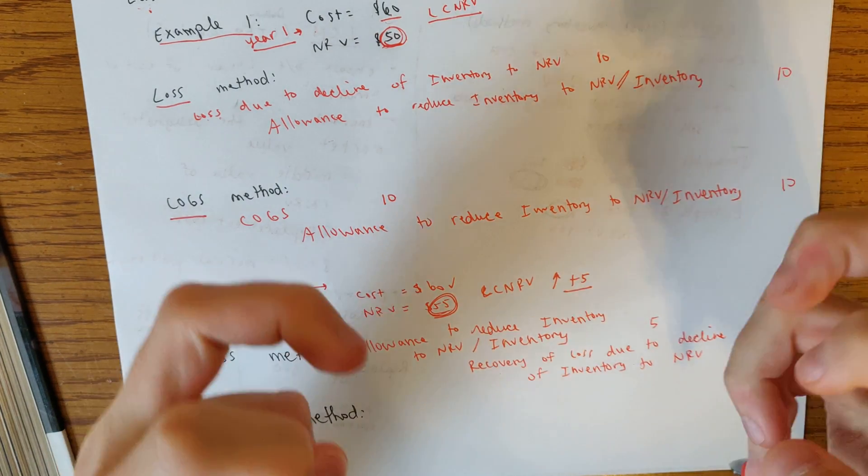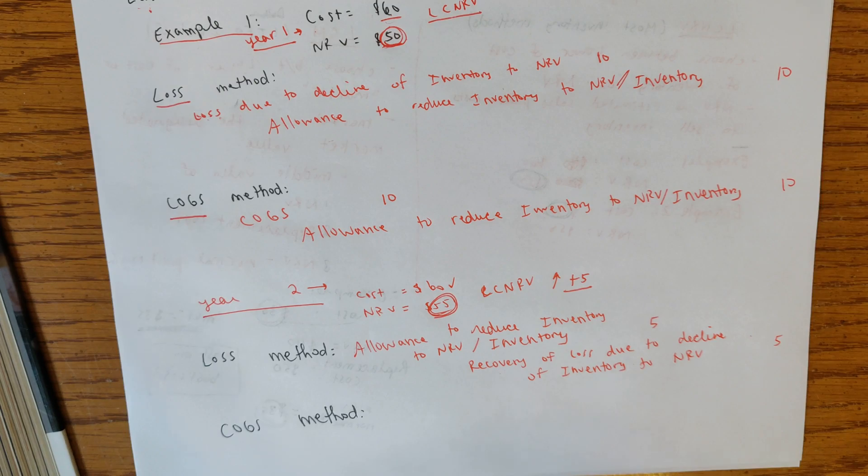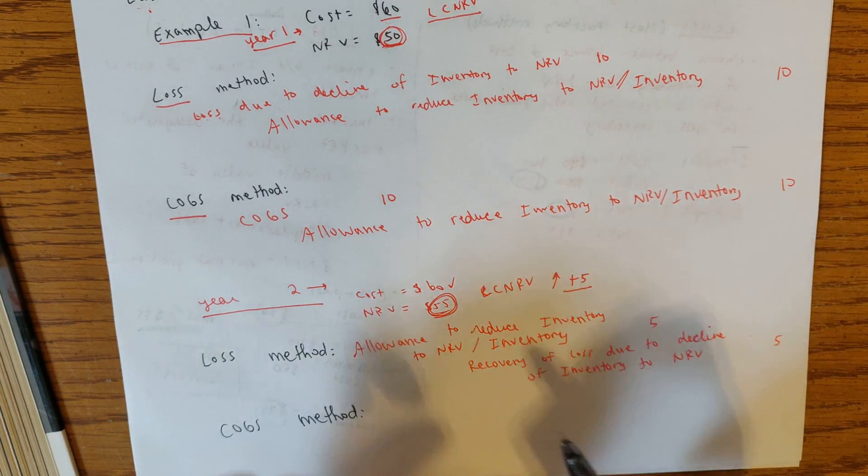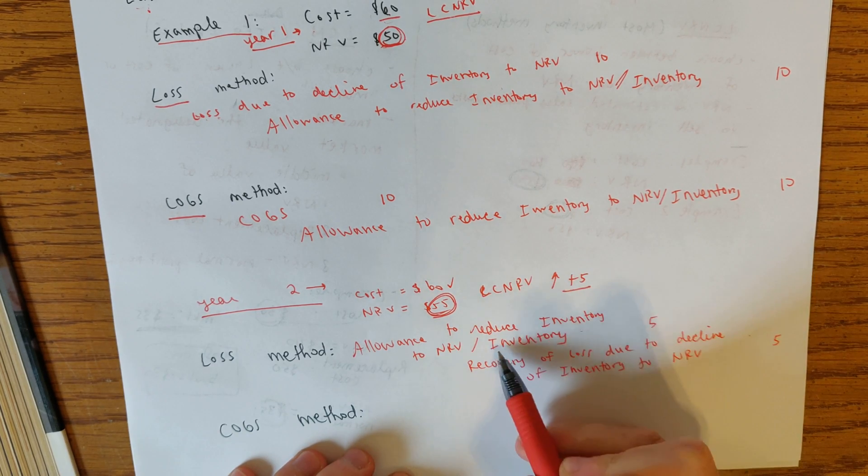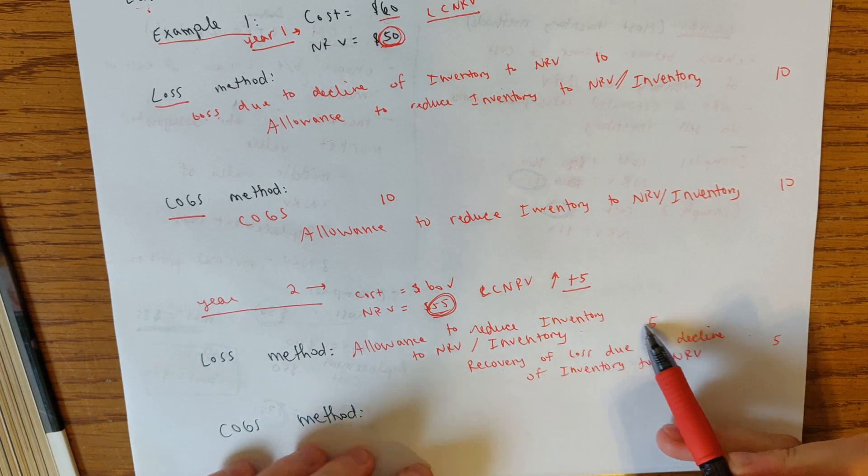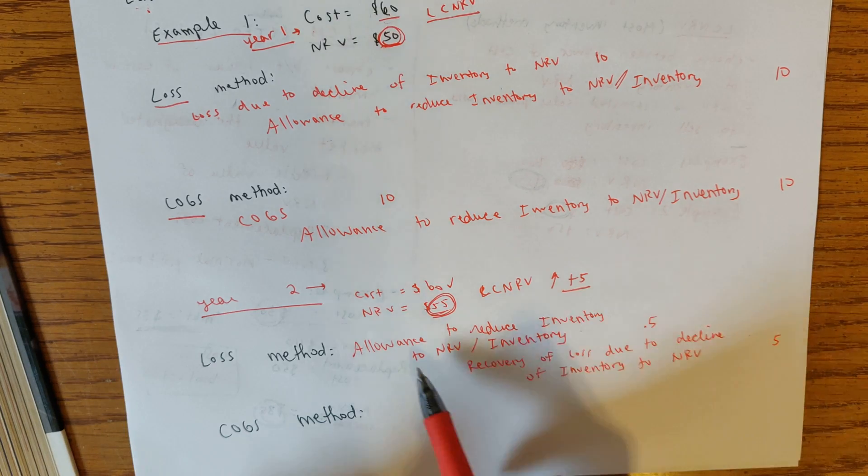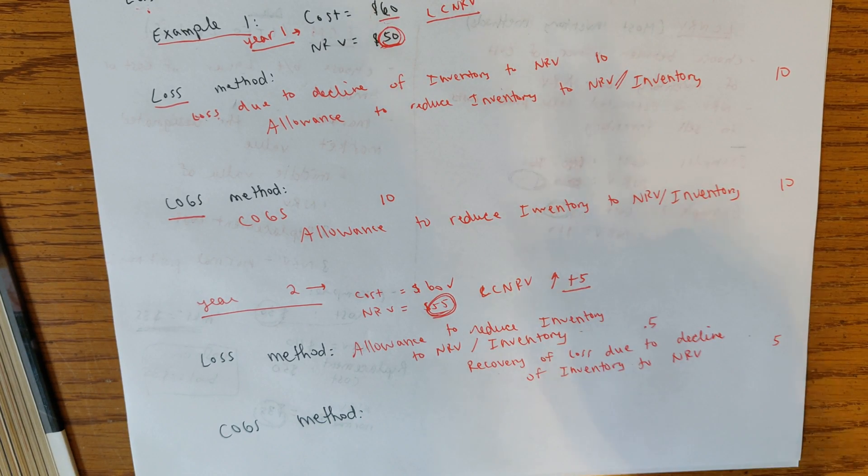You cannot go above the initial cost when you're writing the inventory up in the sense of recovering a loss. You can't do like a true write up in the sense that you would inflate the inventory above its initial cost. The other thing to notice here is that why does this make sense that we're doing this? The inventory one is probably pretty easy to see because we're debiting inventory. We're increasing an asset.